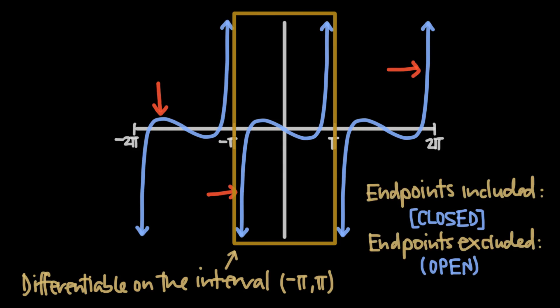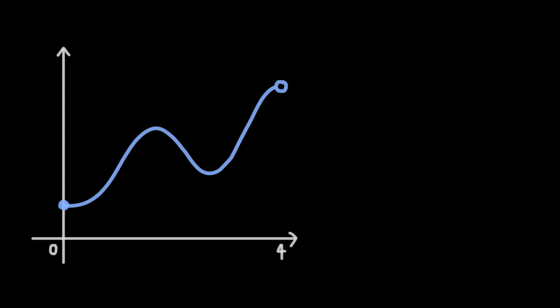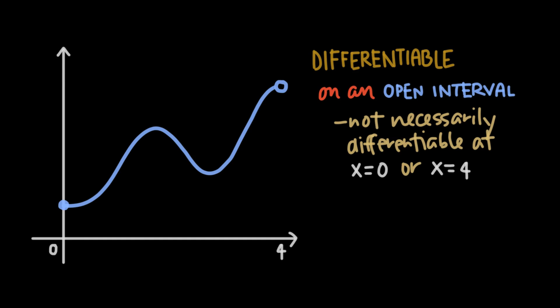If we are including the endpoints of an interval, we call this a closed interval. But if the endpoints are not included, we call it an open interval. So if we look at this curve, we can see that it is differentiable between x equals 0 and x equals 4. If we say the curve is differentiable on the open interval, it means we know it is differentiable everywhere in the interval, but not necessarily at the endpoints. That's the case here — we can see that the curve is differentiable between 0 and 4, but the function isn't differentiable at the endpoints x equals 0 and x equals 4. So we'd say that this curve is differentiable on the open interval 0 to 4.